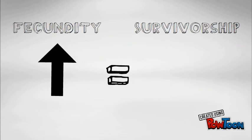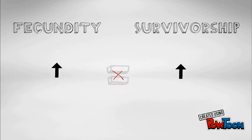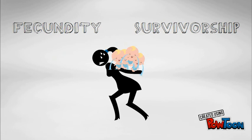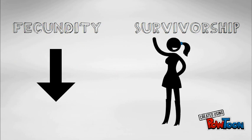We might expect that at high fecundity there's high survivorship, but this is not the case — high fecundity and high survivorship cannot coexist. A mom cannot give birth to a thousand babies and have a higher chance of survival. On the other hand, a female who doesn't invest her energy in her offspring will win with low fecundity and high survivorship. However, there can also be a case where fecundity and survivorship are balanced.